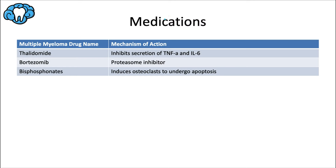Some medications used to treat multiple myeloma: Thalidomide inhibits the secretion of tumor necrosis factor alpha and interleukin-6 to suppress the immune system, which makes sense because multiple myeloma is a cancer of plasma cells, which are part of the immune system. Bortezomib is a proteasome inhibitor — it blocks the proteasomes required for the accumulation of regulatory proteins important in cell cycle control, making it an anti-cancer or chemotherapeutic agent. Bisphosphonates induce osteoclasts to undergo apoptosis, so they're used to maintain bone strength and reduce symptoms of bone pain. Radiation therapy can also be used.